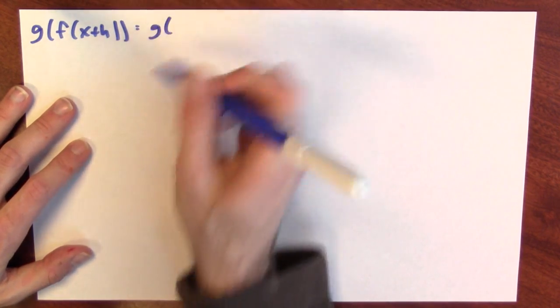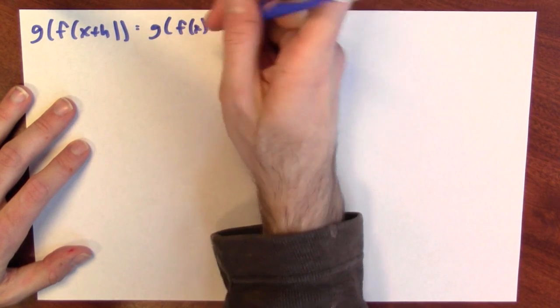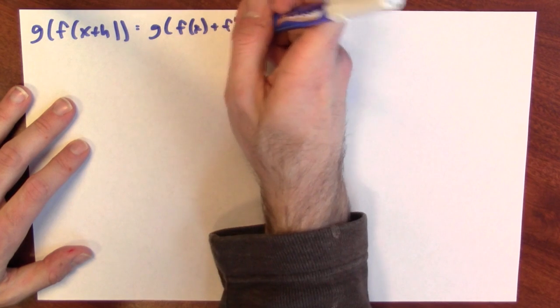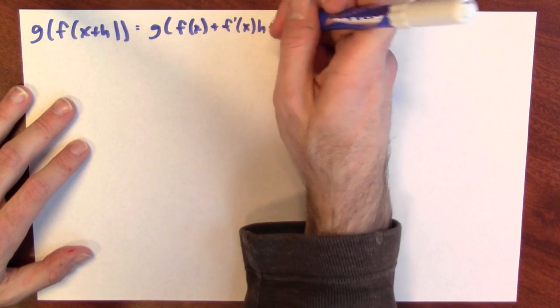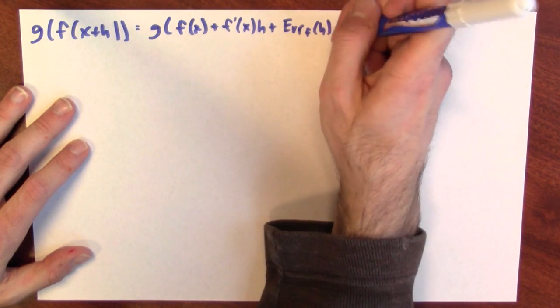So this is g of, instead of f of x plus h, f of x plus the derivative of f at x times h plus an error term, which I'm calling error of f of h times h.